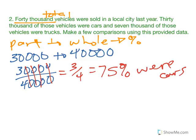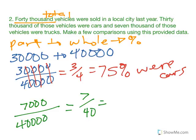You can do that same thing with trucks. There were 7,000 trucks over 40,000 total vehicles. That reduces to 7 over 40, which is 17.5%. So 17.5% of all vehicles were trucks.